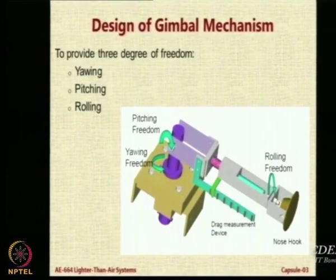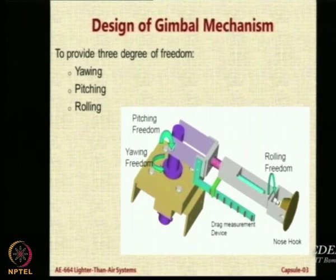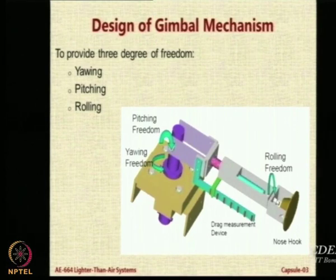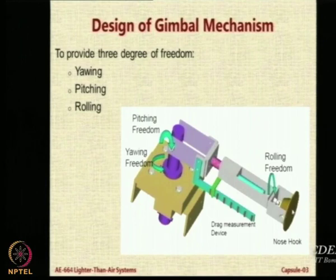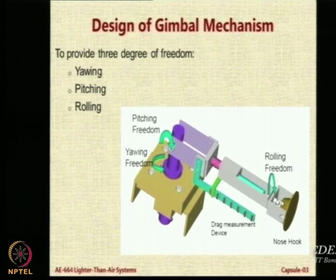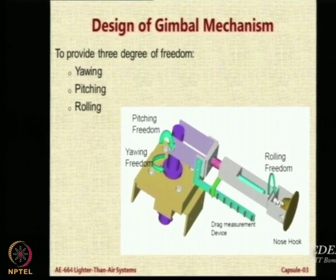Based on these requirements, the mast was designed. Here is a pictorial indication of the freedoms expected on the airship, along with a close-up view of the gimbal mechanism designed by a student named Sagar Kale in 2005. He proposed a system on top of the mast providing rolling freedom, with a nose hook attaching to the airship nose and a spring-mounted system pulled by drag force. The mounting also provides yawing and pitching freedom.